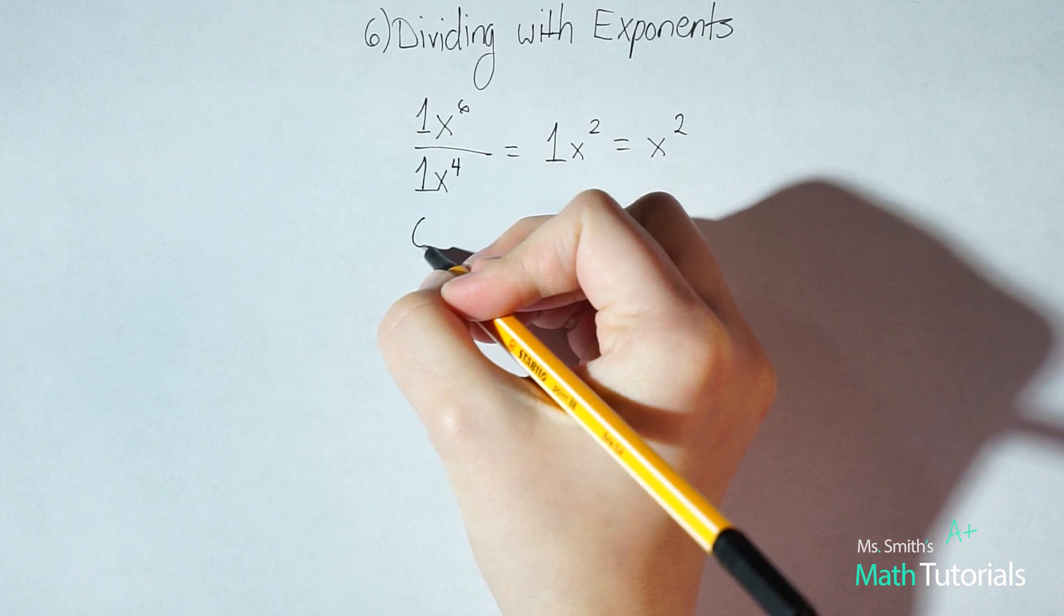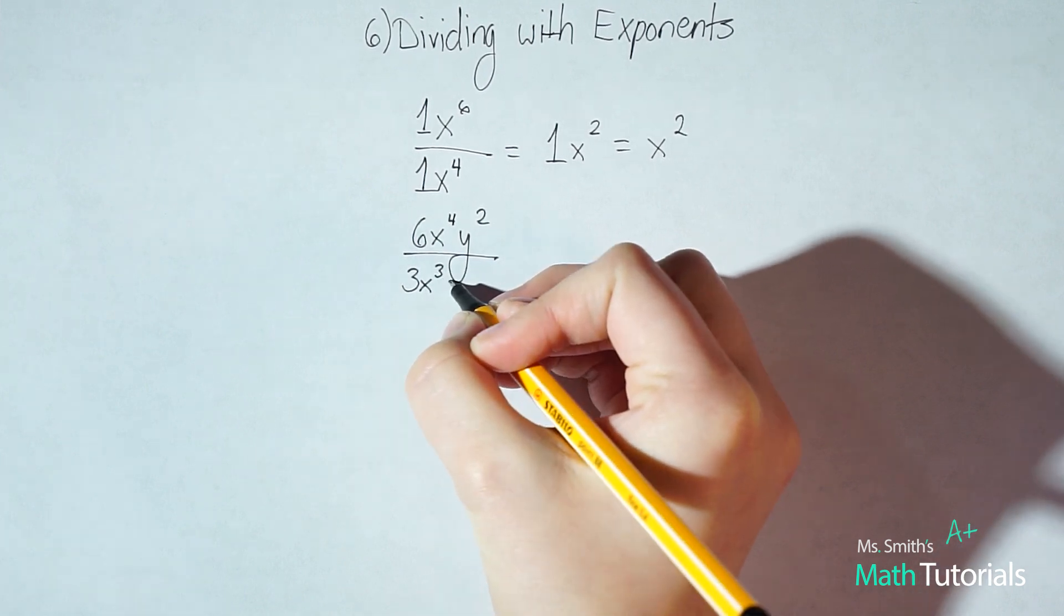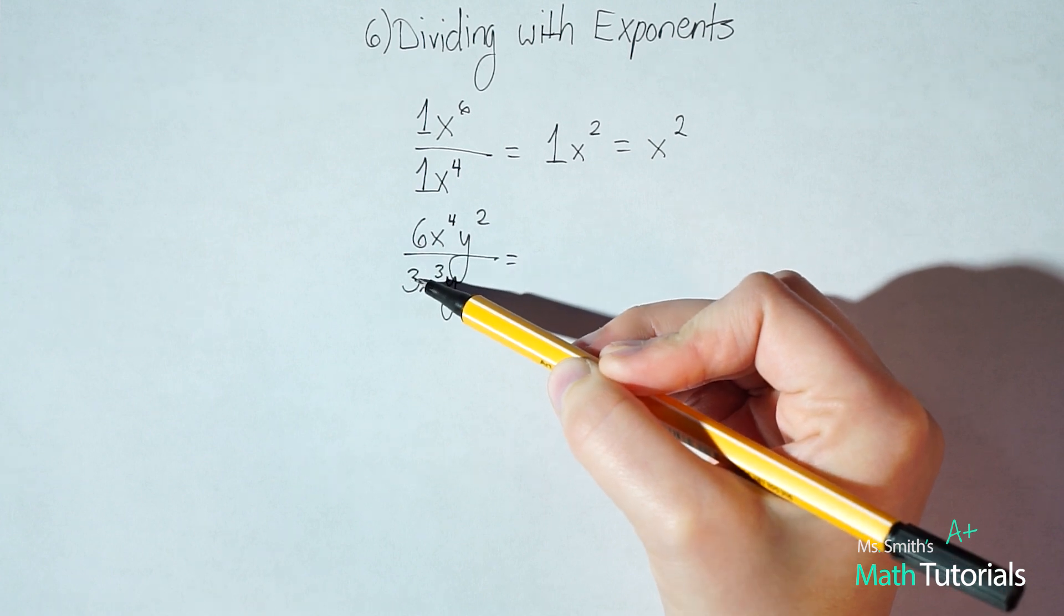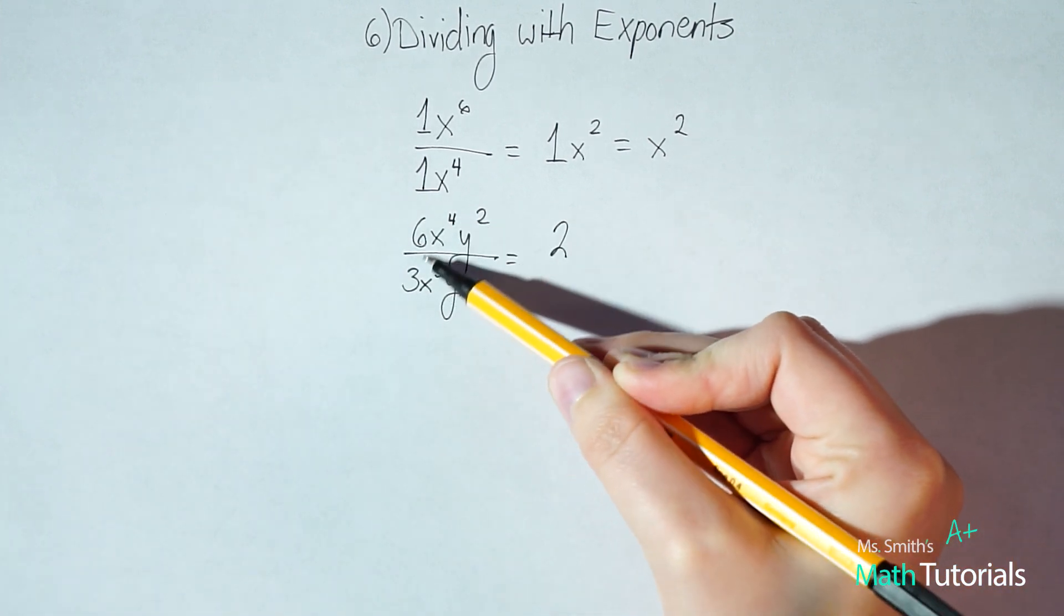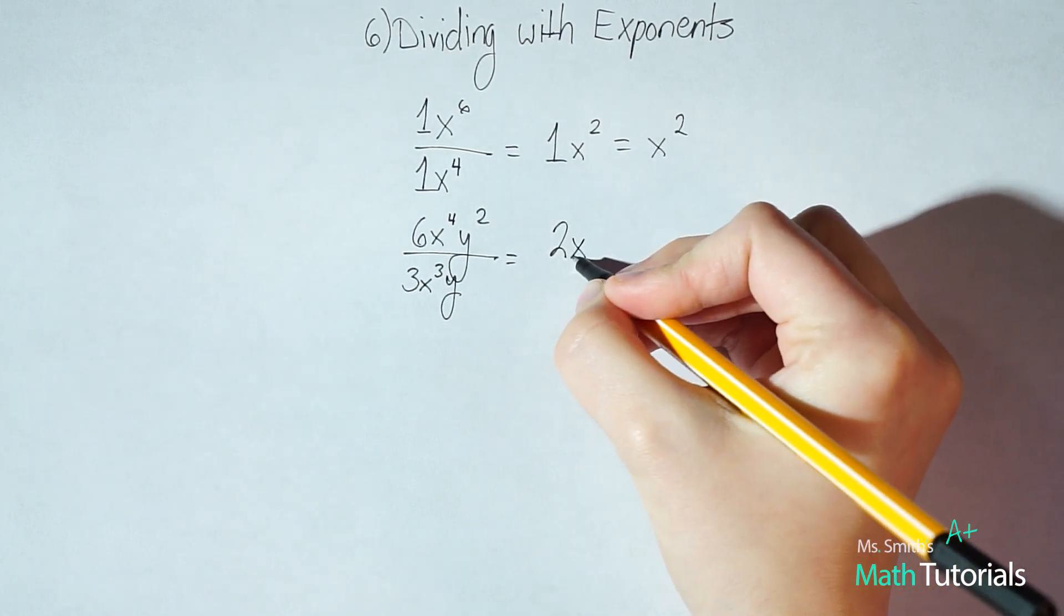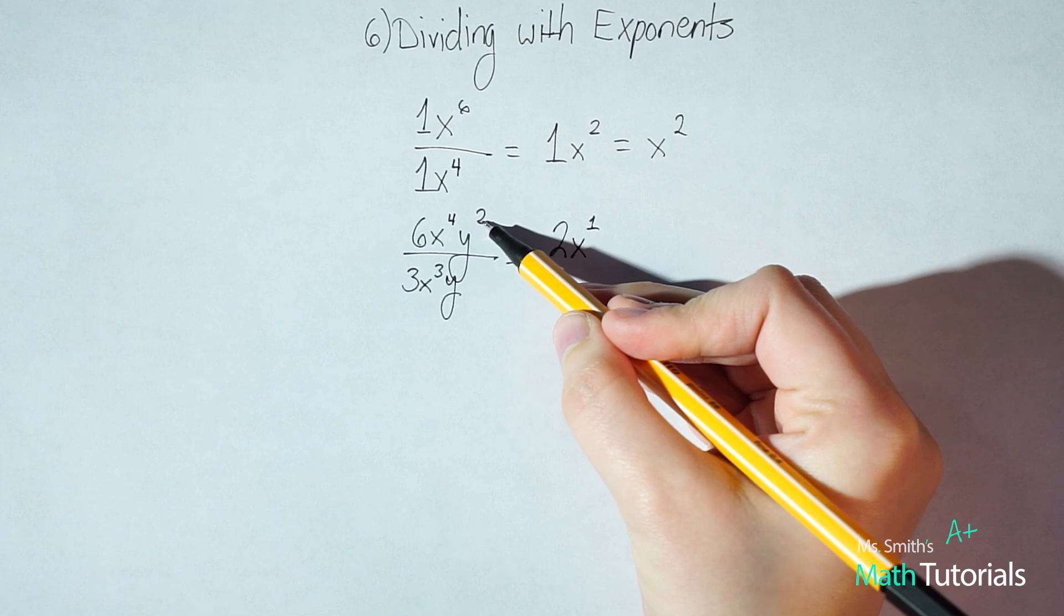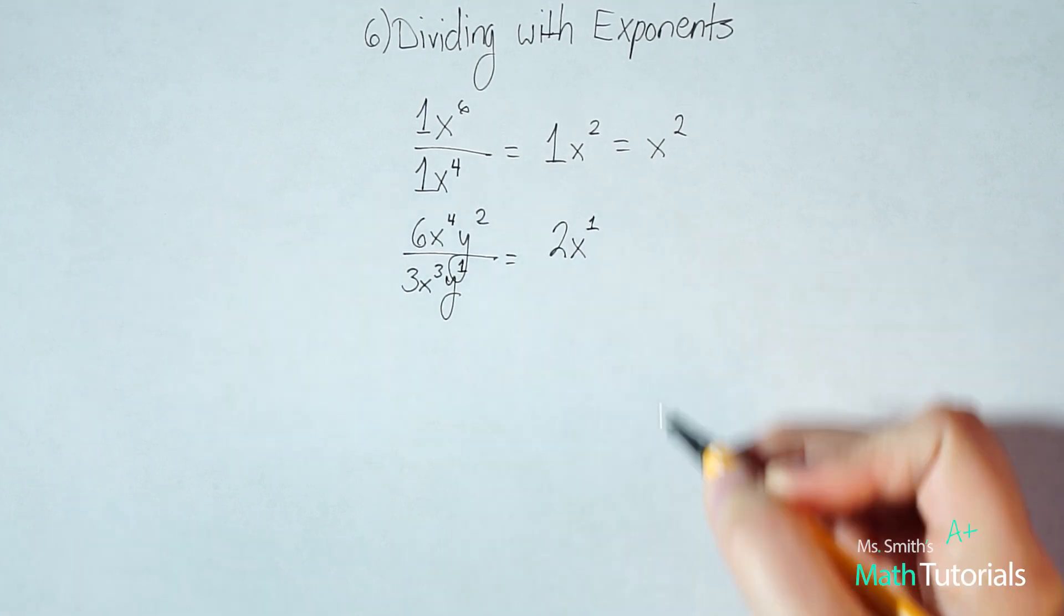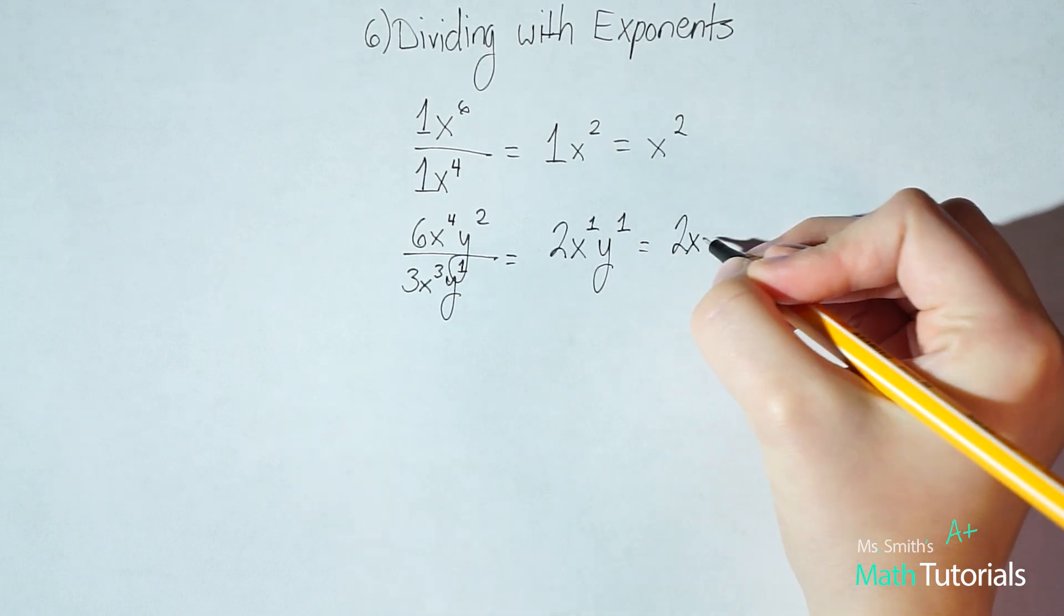A little more complicated example might be six x to the fourth y to the second over three x to the third y. Okay, so this looks a whole lot more complicated than it really is. We just take it one step at a time. We first do our whole numbers. So we've got six divided by three, which I know simplifies to two. Then we've got x to the fourth divided by x to the third. Notice I'm combining my like terms. I can't combine the x's and y's because they're not like terms. So four minus three would be one. So we would just do x. If you need to see the one there, you can write it there, but I wouldn't include it in your final answer. And then we've got y to the second divided by y to the understood first. Remember we talked about that in my first video. If there's nothing there, there's an understood one there. So two minus one would just be one. So again, if you need to see the one there, go ahead. But we would rewrite this as two xy.